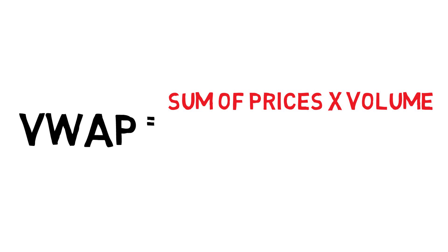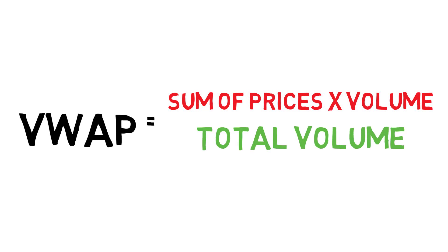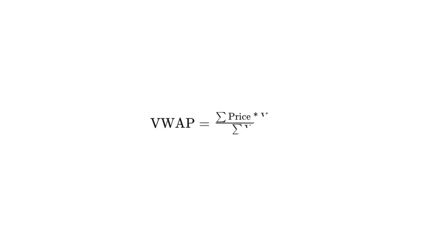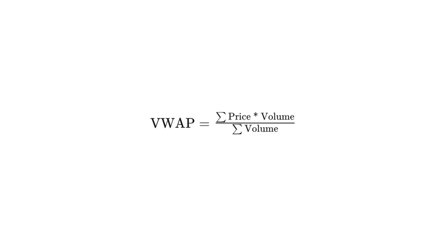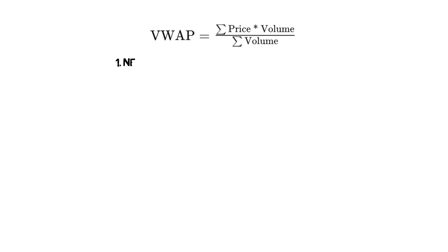VWAP is calculating the sum of a price multiplied by volume, divided by total volume. This may sound confusing and make no sense, but once you begin to piece the components together, everything will come together in your head. To fully understand what you are looking at, we are going to manually create our own VWAP.